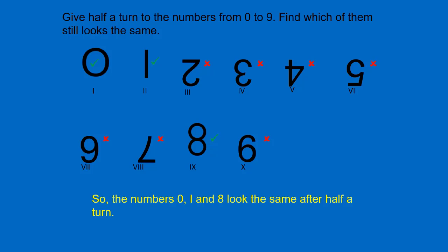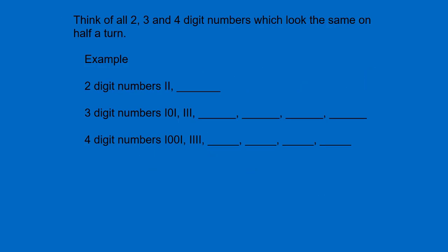So the numbers 0, 1 and 8 look the same after half a turn. Now think of all 2, 3 and 4 digit numbers which look the same on half a turn.